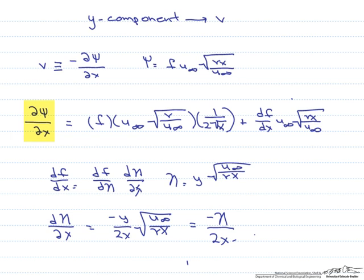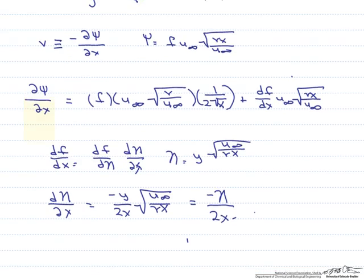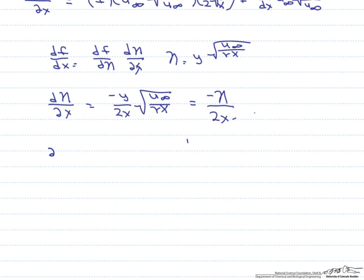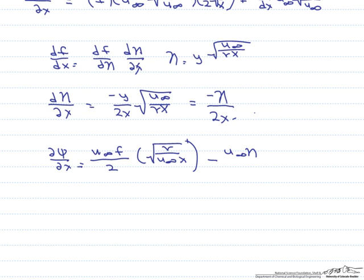What we are trying to find is d phi dx, so our d phi dx equals u infinity times f over 2 times the square root of viscosity divided by u infinity times x minus u infinity times eta divided by 2x.